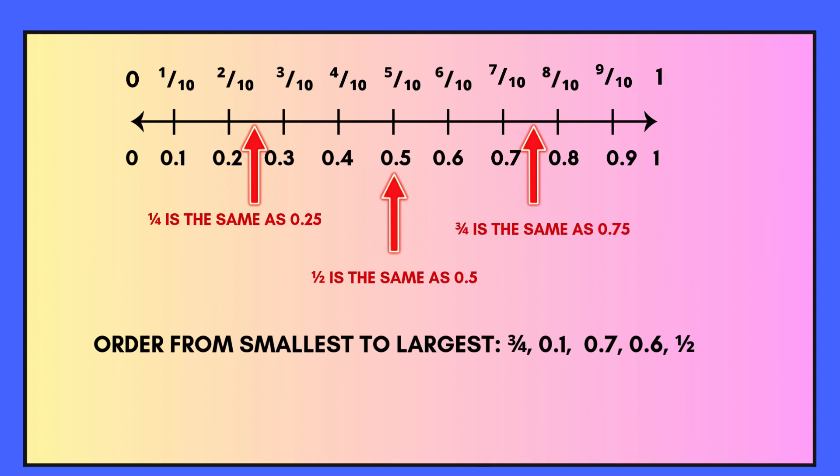Now try ordering the following decimals and fractions from smallest to largest. Please pause the video while you work out your answer. You need to order: three quarters, 0.1, 0.7, 0.6, and one half.